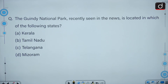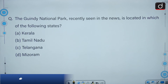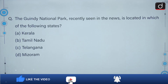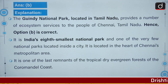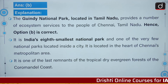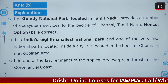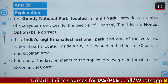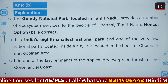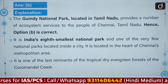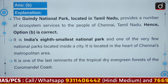The Guindy National Park, recently seen in the news, is located in Tamil Nadu — the correct answer is option B. Guindy National Park provides ecosystem services to the people of Chennai. It is India's 8th smallest national park, one of the very few national parks located inside a city, situated in the heart of Chennai's metropolitan area. It is one of the last remnants of the tropical dry evergreen forests of the Coromandel Coast.